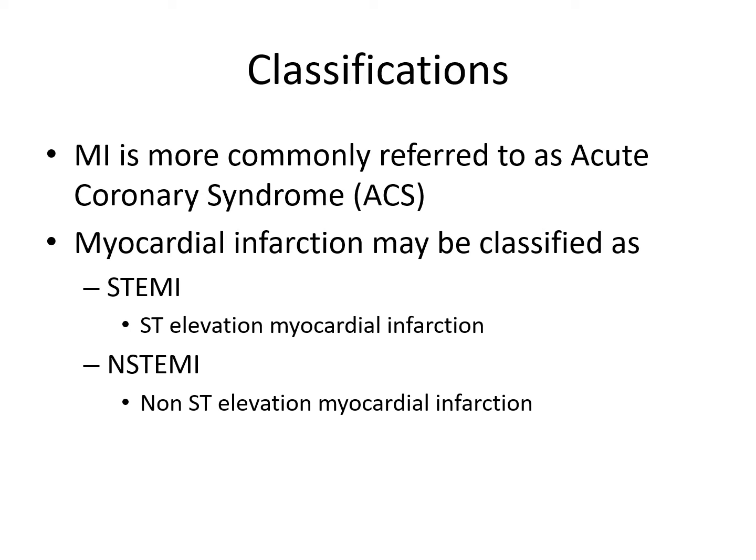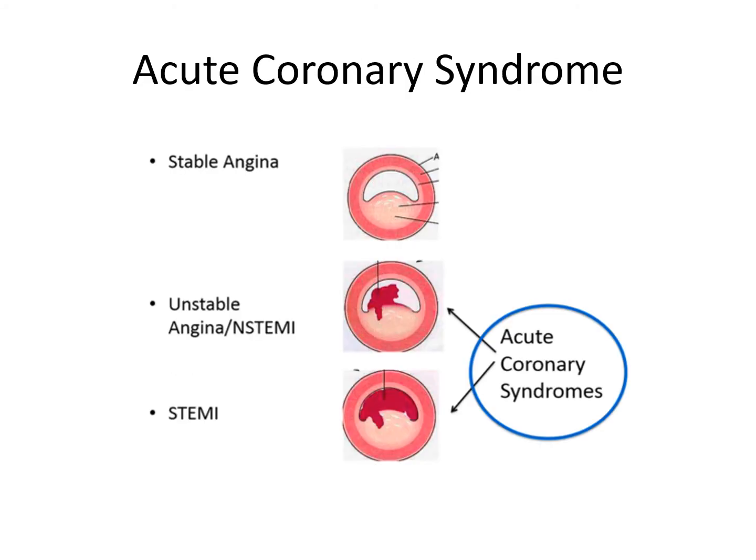Physiologically, a non-STEMI involves a partial occlusion of a coronary artery, while a STEMI involves a complete occlusion. Sometimes a non-STEMI can progress to a STEMI. Stable angina is not considered part of acute coronary syndrome. Acute coronary syndrome refers to unstable angina, non-STEMI, and STEMI—whether partial or complete occlusion, all are included in that definition.